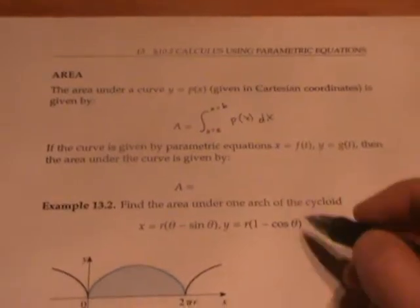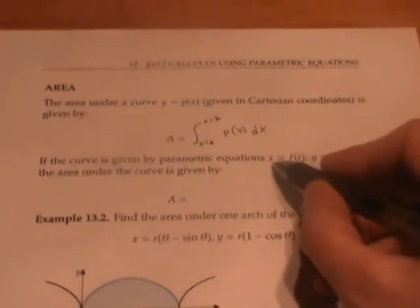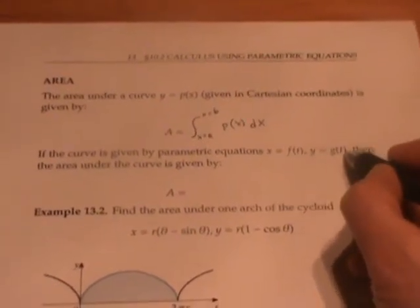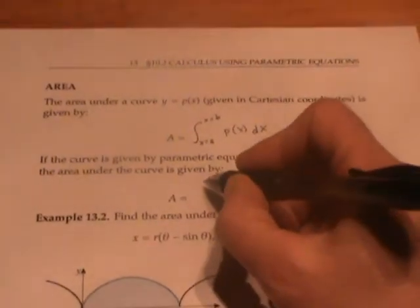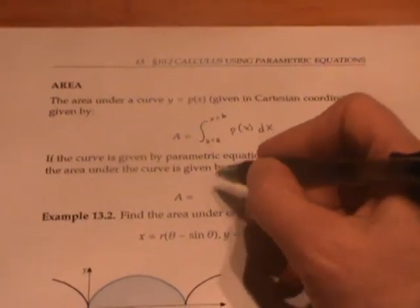If, instead, our curve is given by the parametric equations x equals f of t, y equals g of t, then the area under the curve, in between the curve and the x-axis,